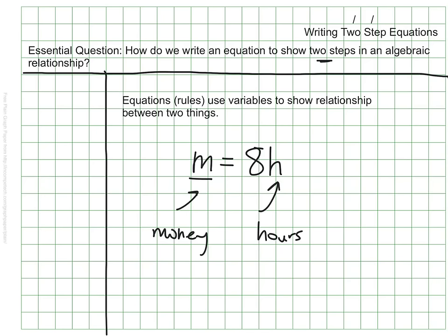Sometimes, however, we need more than one step to show the relationship. This is an example of a one-step equation because all we're doing is multiplying. But sometimes we have to do more than just multiply. Sometimes we do a mixture of adding, multiplying, subtracting, or dividing.